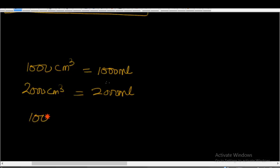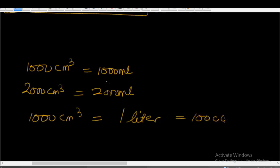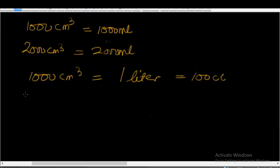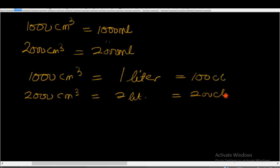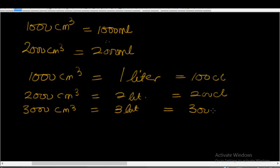1,000 cm cube is equal to 1 liter, and is also equal to 100 centiliters (CL). This also means that 2,000 cm cube is equal to 2 liters, and 3,000 cm cube is equal to 3 liters and is equal to 300 CL.